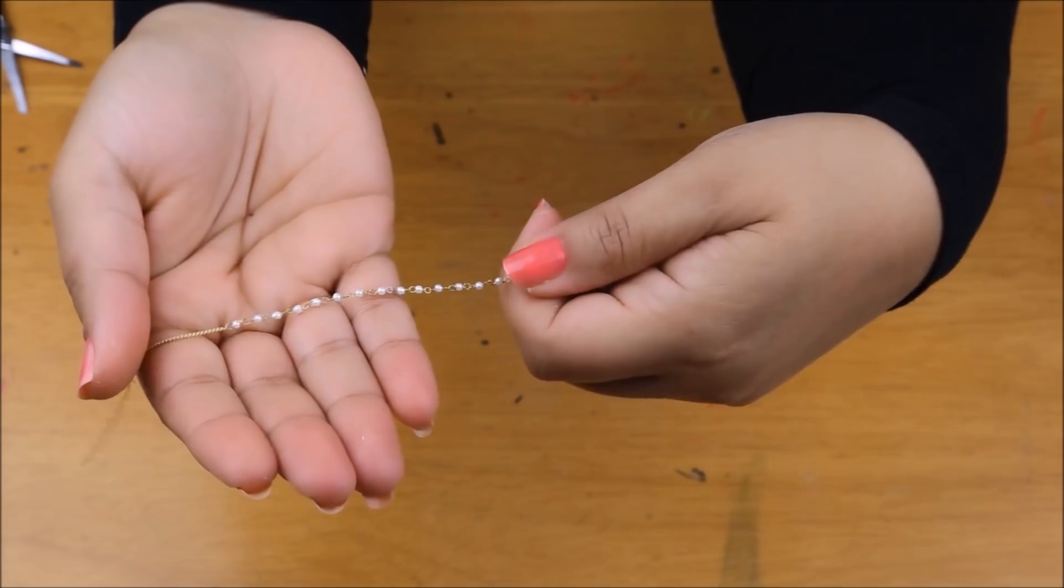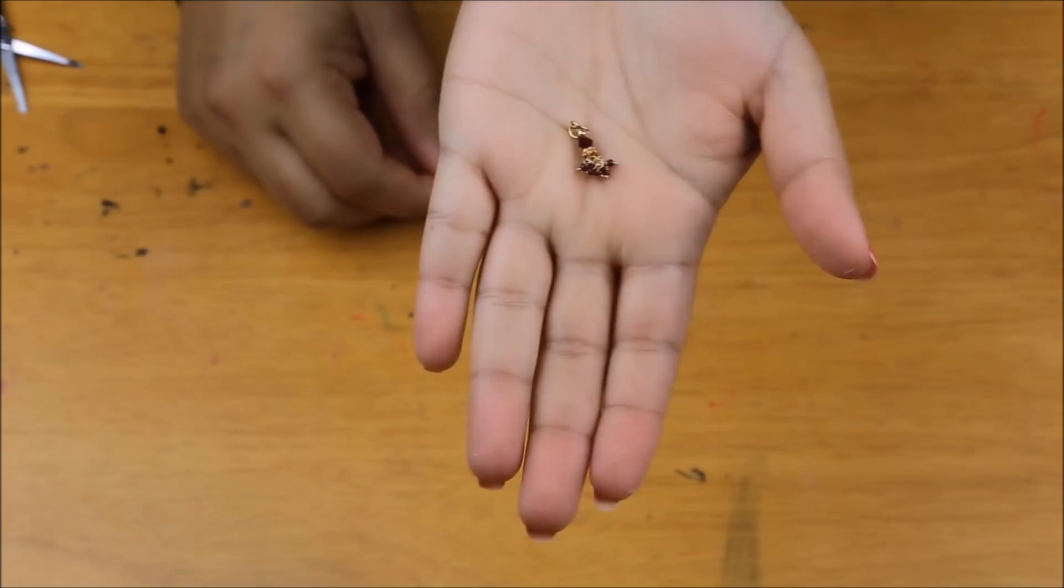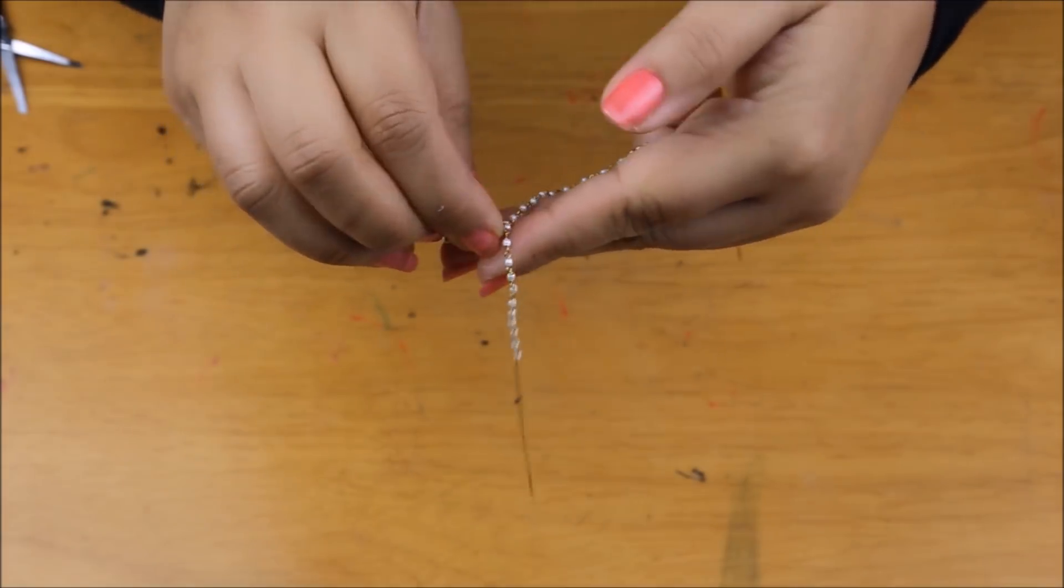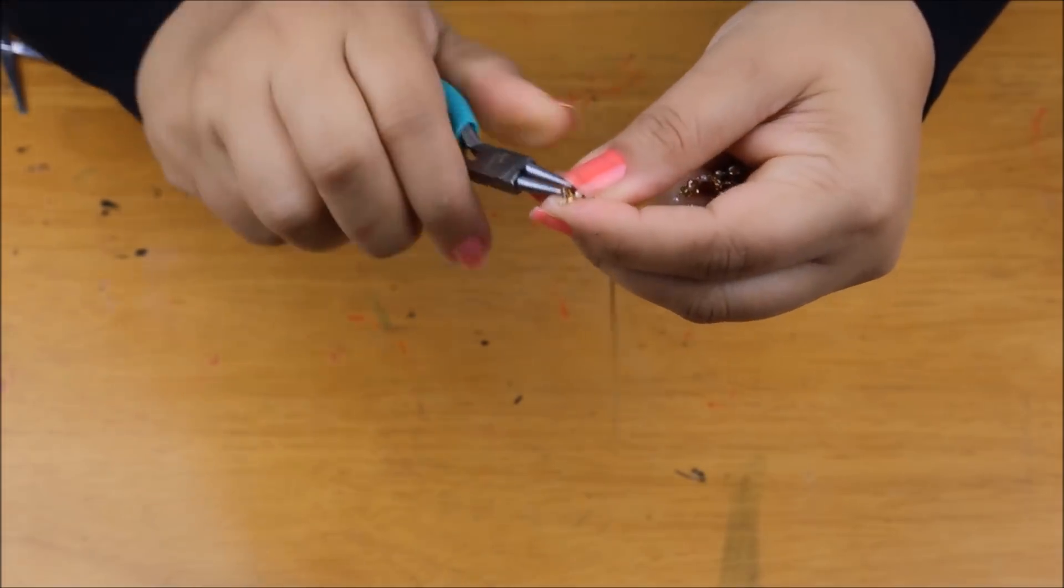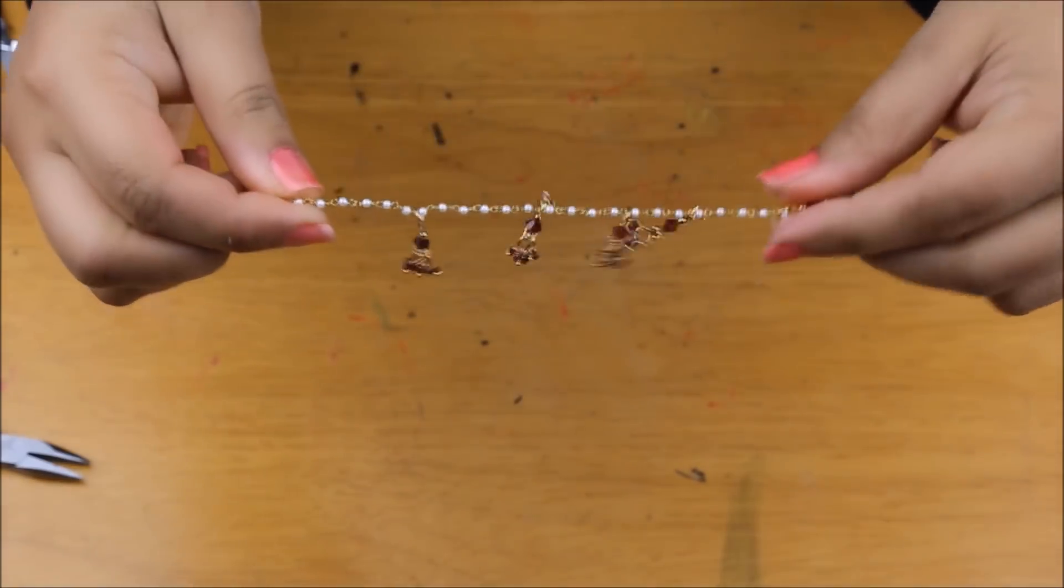This next step is totally optional. I had some extra chain left so I just attached some more danglers to it. I thought I will decorate the choker a little bit more but you don't have to do this.